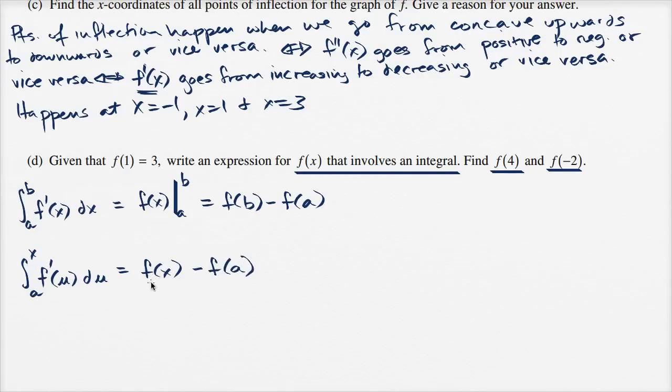Or if we wanted to solve for f of x, we could add f of a to both sides, and we would get f of x is equal to the integral from a to x of f prime of u du plus f of a. And once again, why did I pick u? Well, I just needed some letter other than x, since I already used x as one of my bounds of integration.